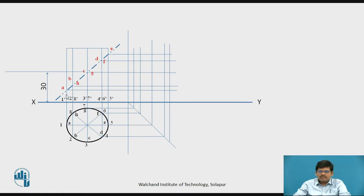Now, as we see, the points where the cutting plane cuts the generators are being named as A, B, C, D, E and F.